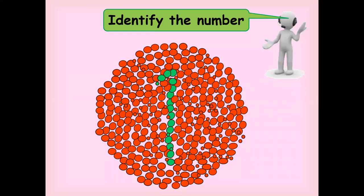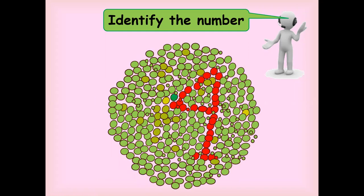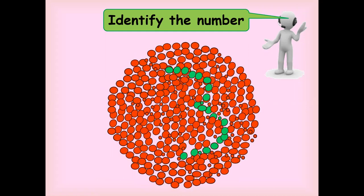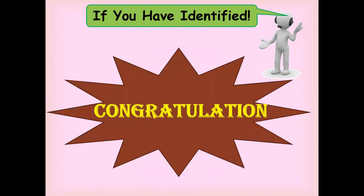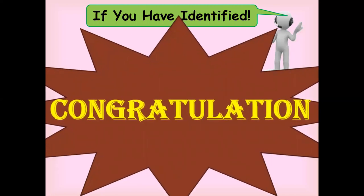Identify the number — this is one. Go for next, and it is four. Go ahead for the next number, and it is three. So if you have identified all these numbers correctly, congratulations — you are not color blind.